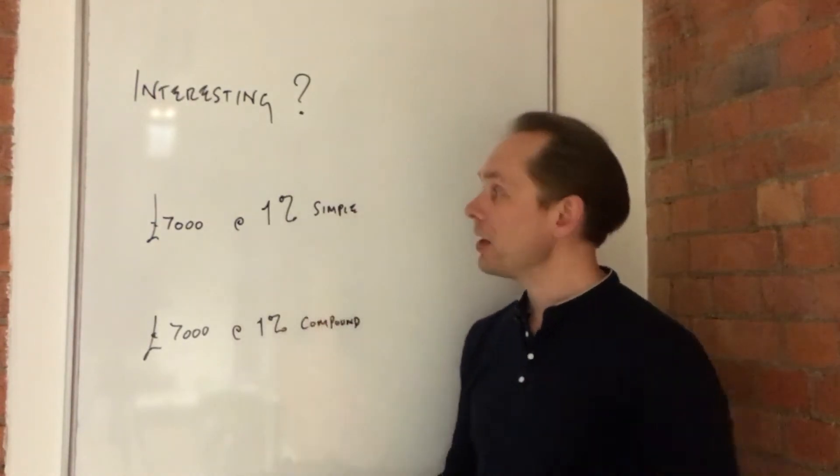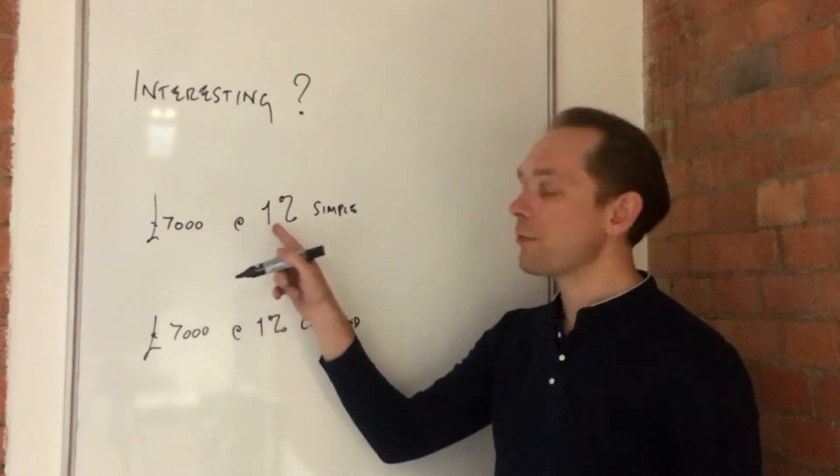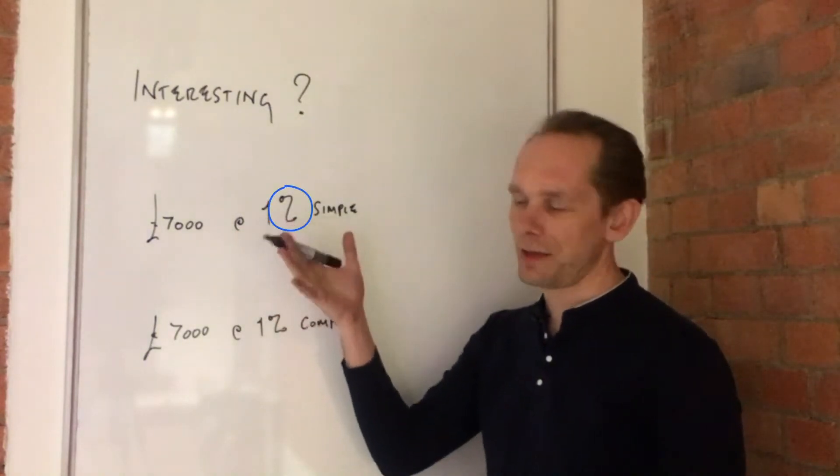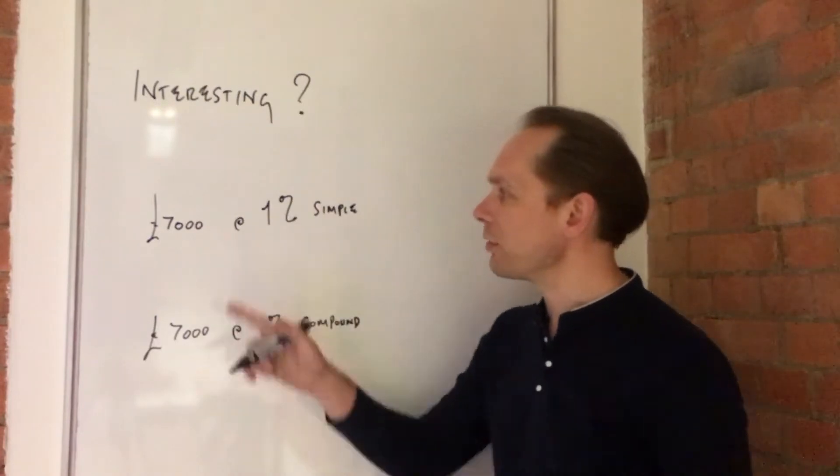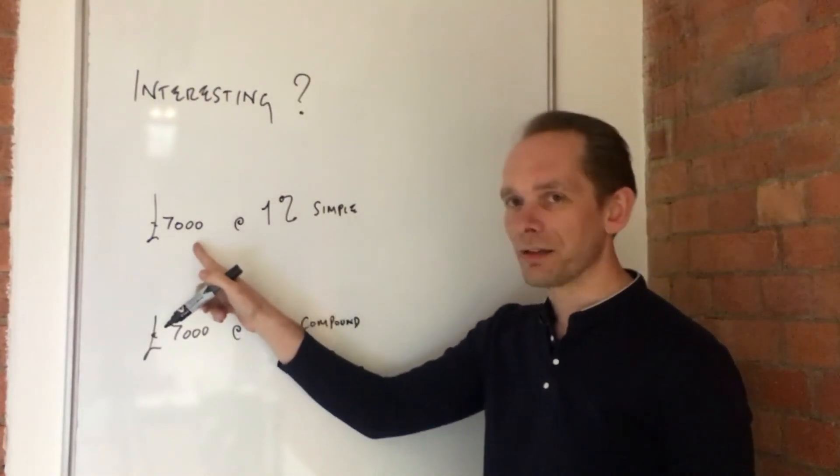That is where the bank will look at the amount of money and work out 1% of that, if that's their interest rate, and it will add that same amount on every single year. So after one year they're adding £70 and you get £7,070.